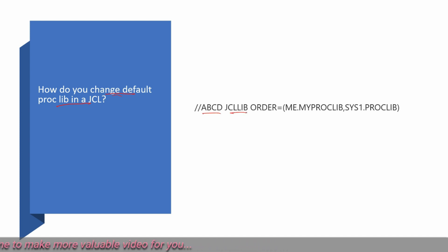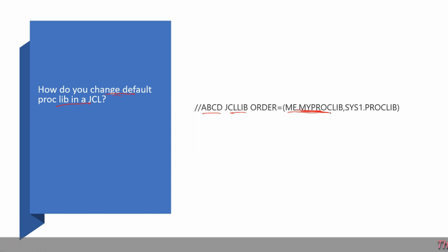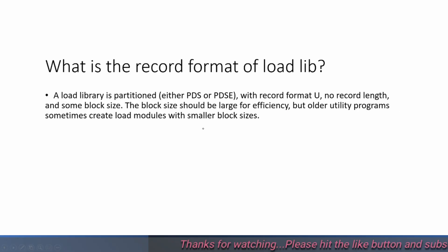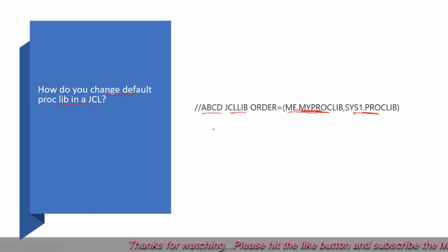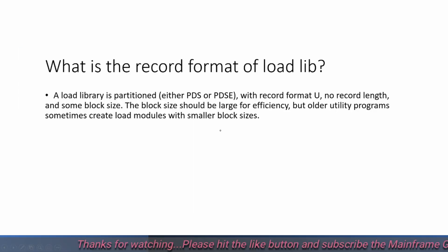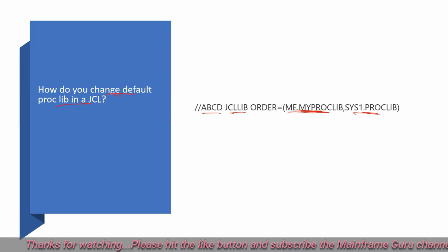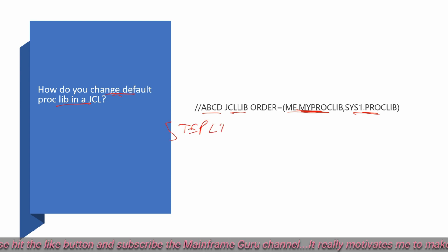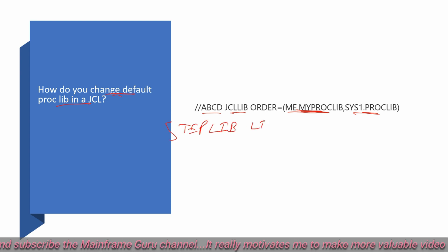How do you change the default PROCLIB in a JCL? You can give the JCL library order as A, B, C, D — specifying your private library first, then the system library. Or you can give it in the STEPLIB library.